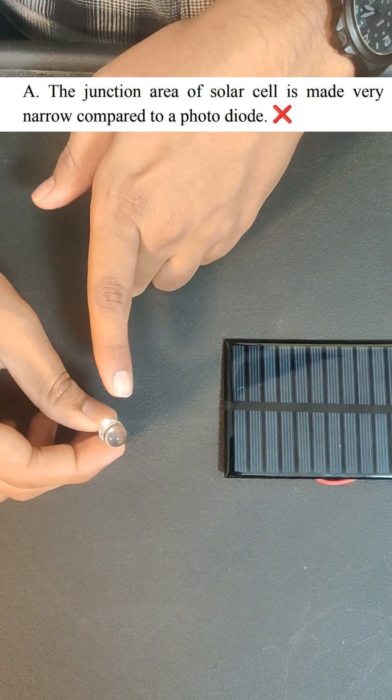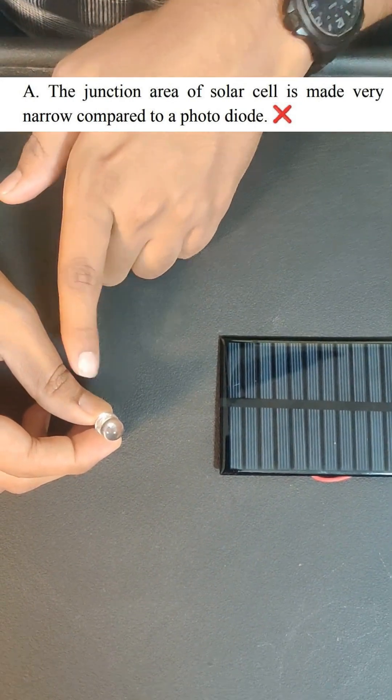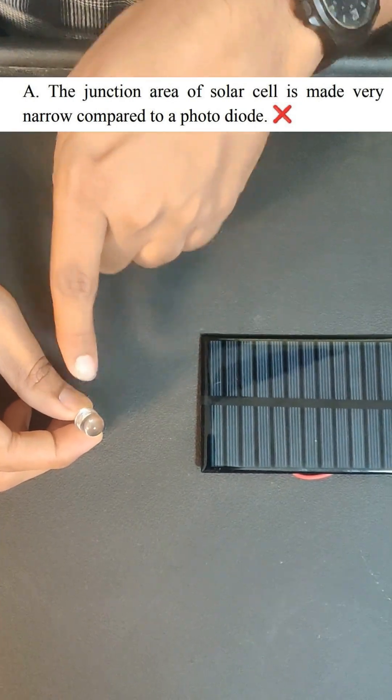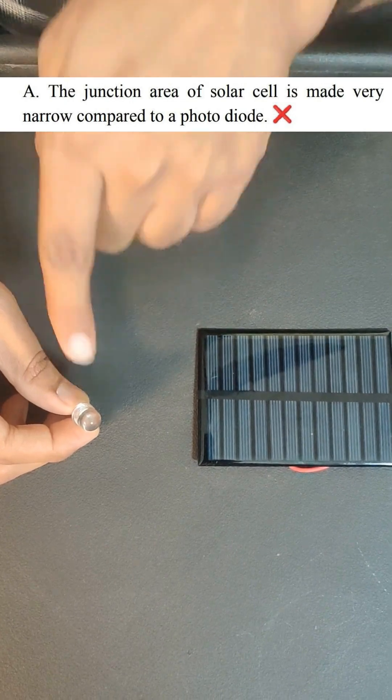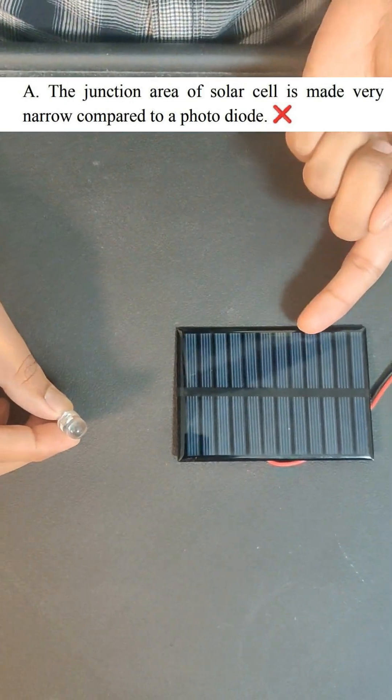Whereas the photodiode just needs to detect the intensity at a particular point. So the junction area is very small in the photodiode as compared to the solar cell.